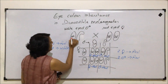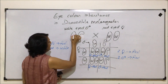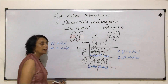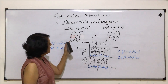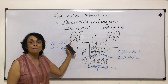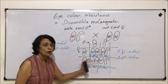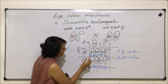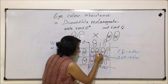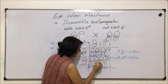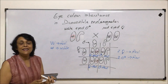The mutant white-eyed gene (small w) from the parent male has gone to the F1 females. This is what we need to track — where does that recessive gene travel through the generations.